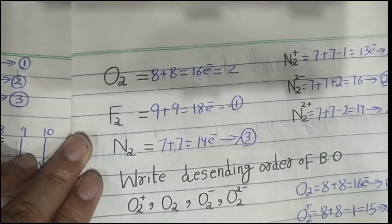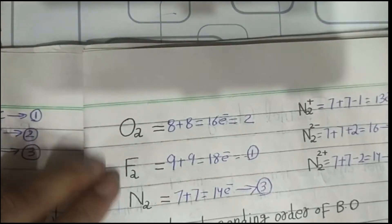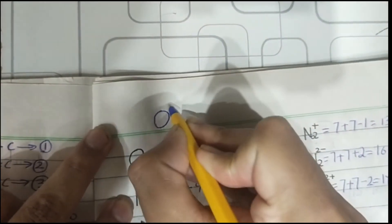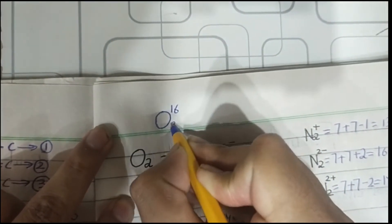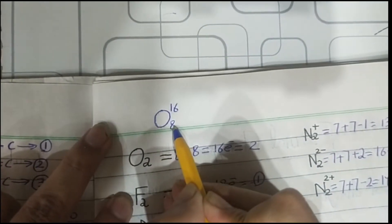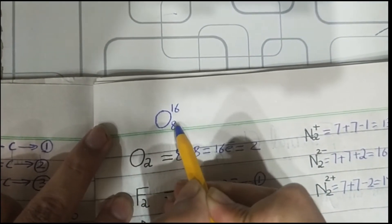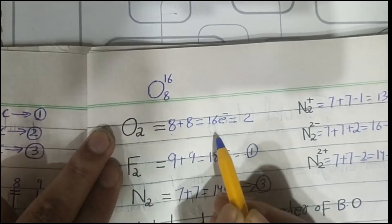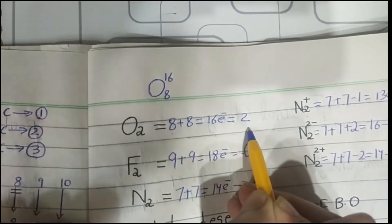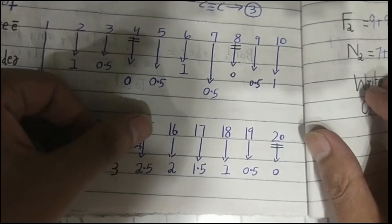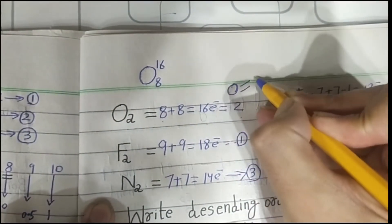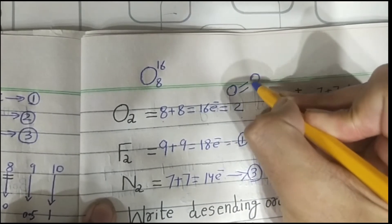Here is our example to calculate bond order. For O2: oxygen has atomic number 8, meaning 8 protons and 8 electrons. One oxygen atom contains 8 electrons, so two oxygen atoms contain 16 electrons, which gives two bond order — meaning a double bond between the atoms.